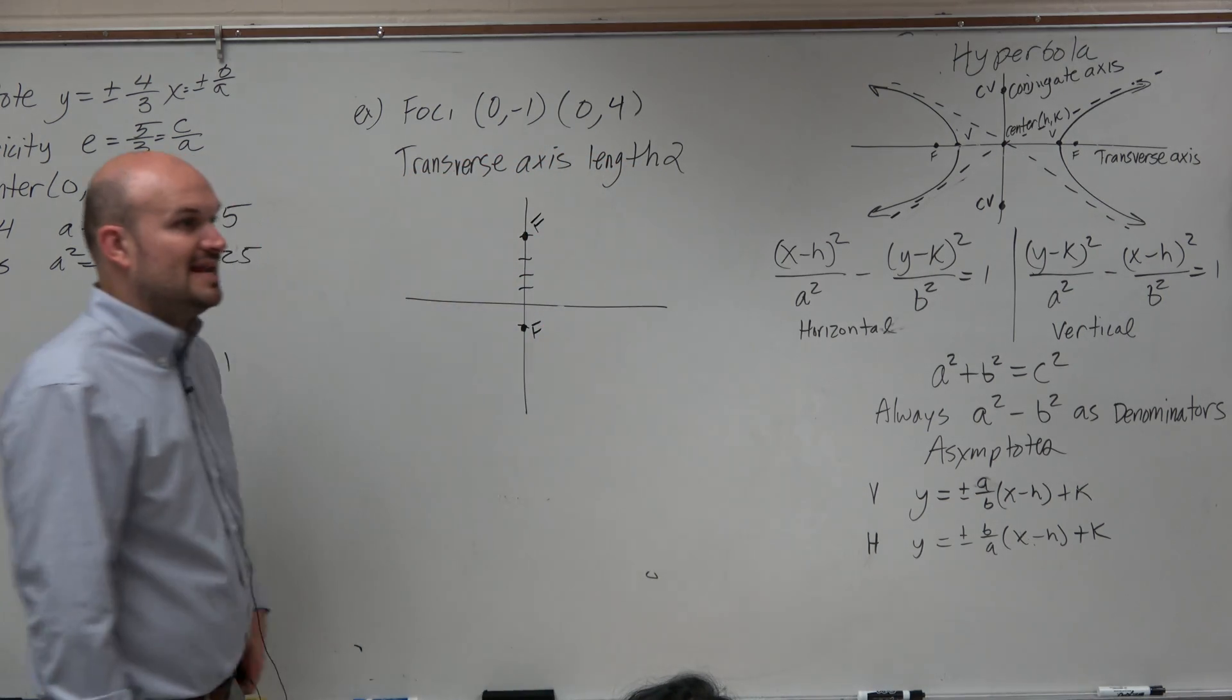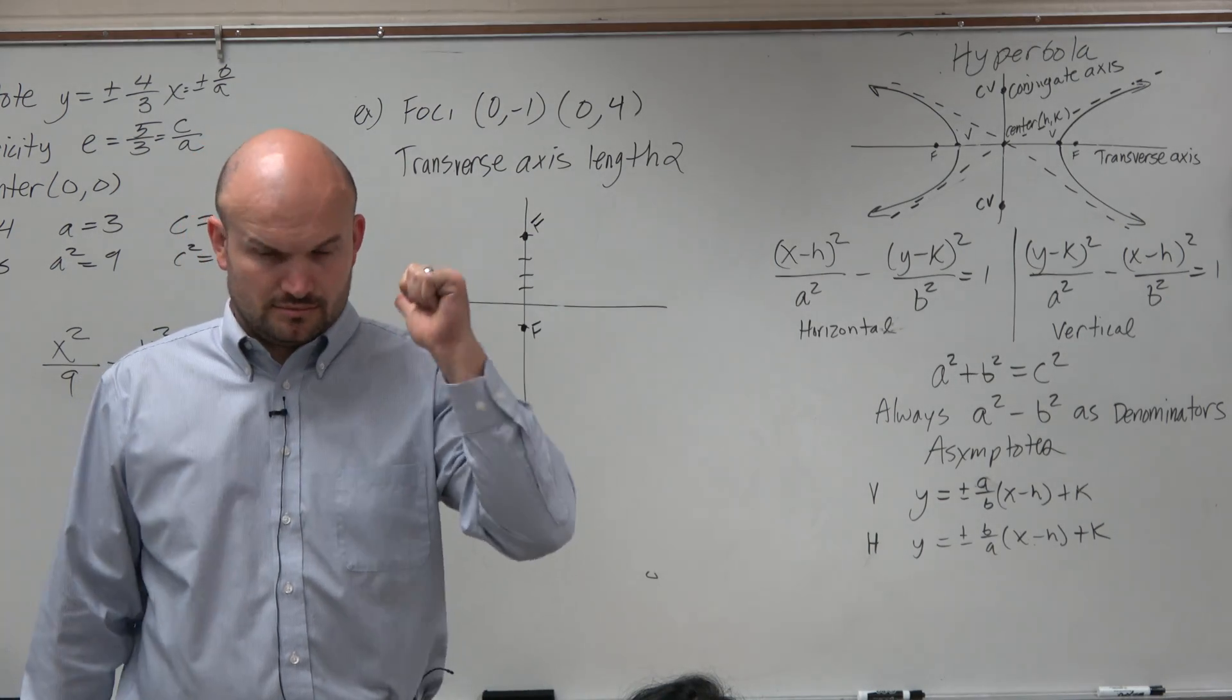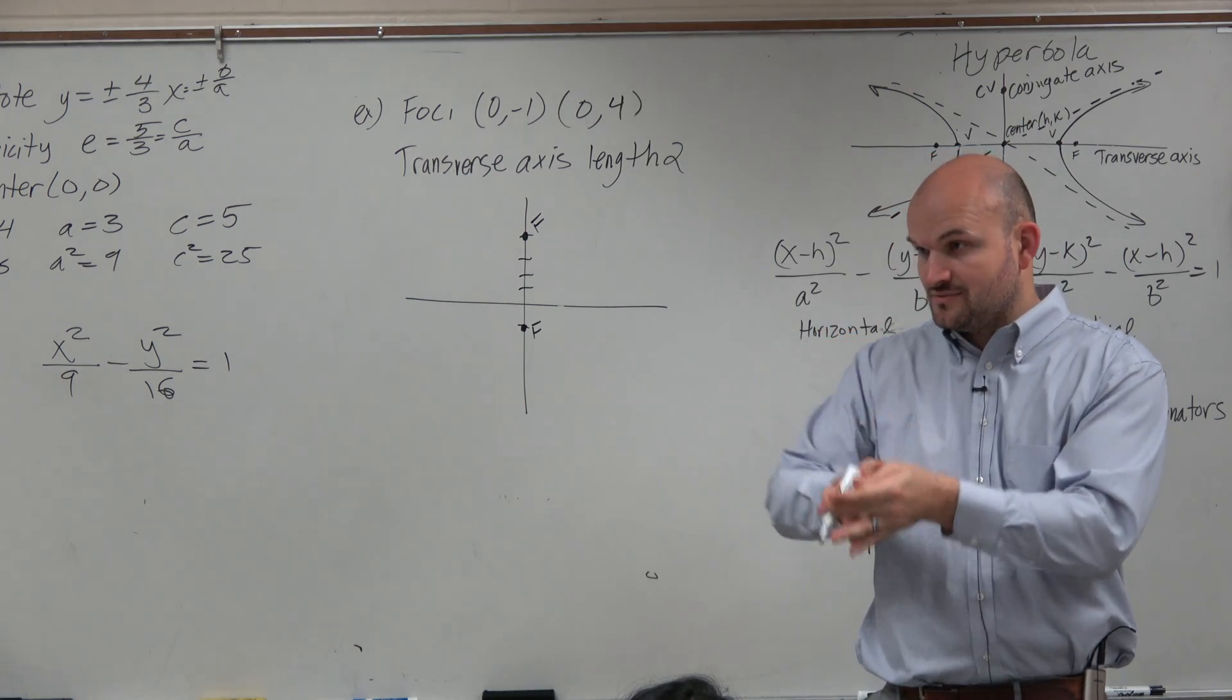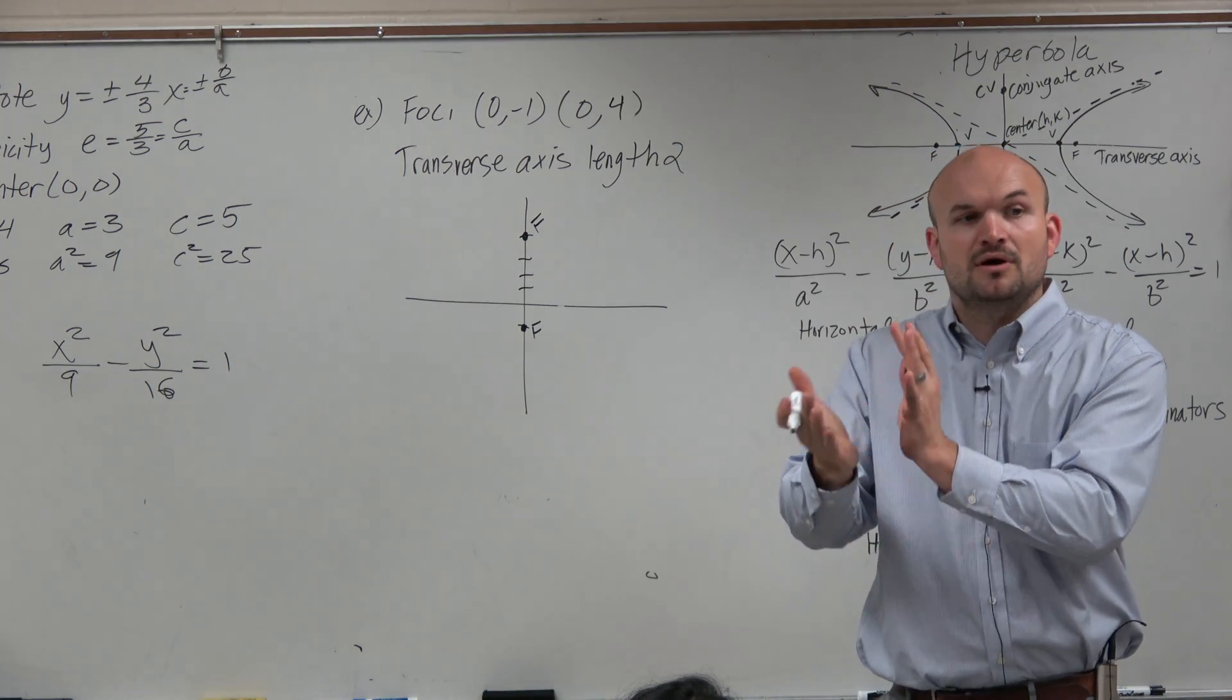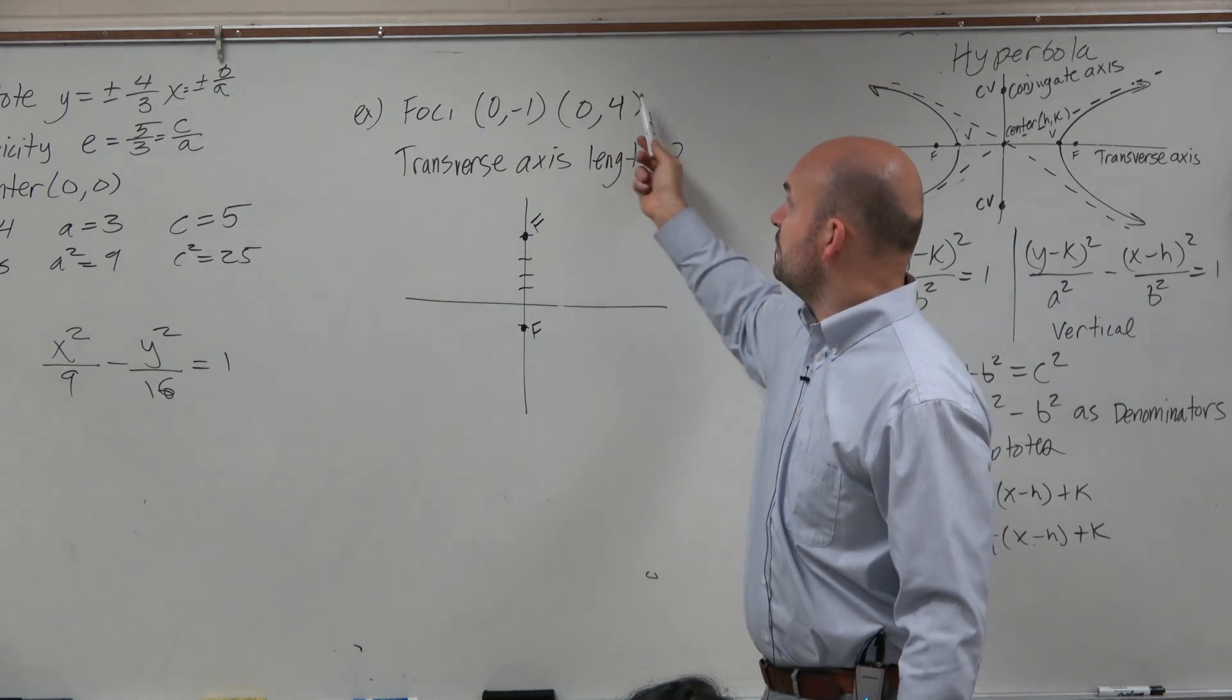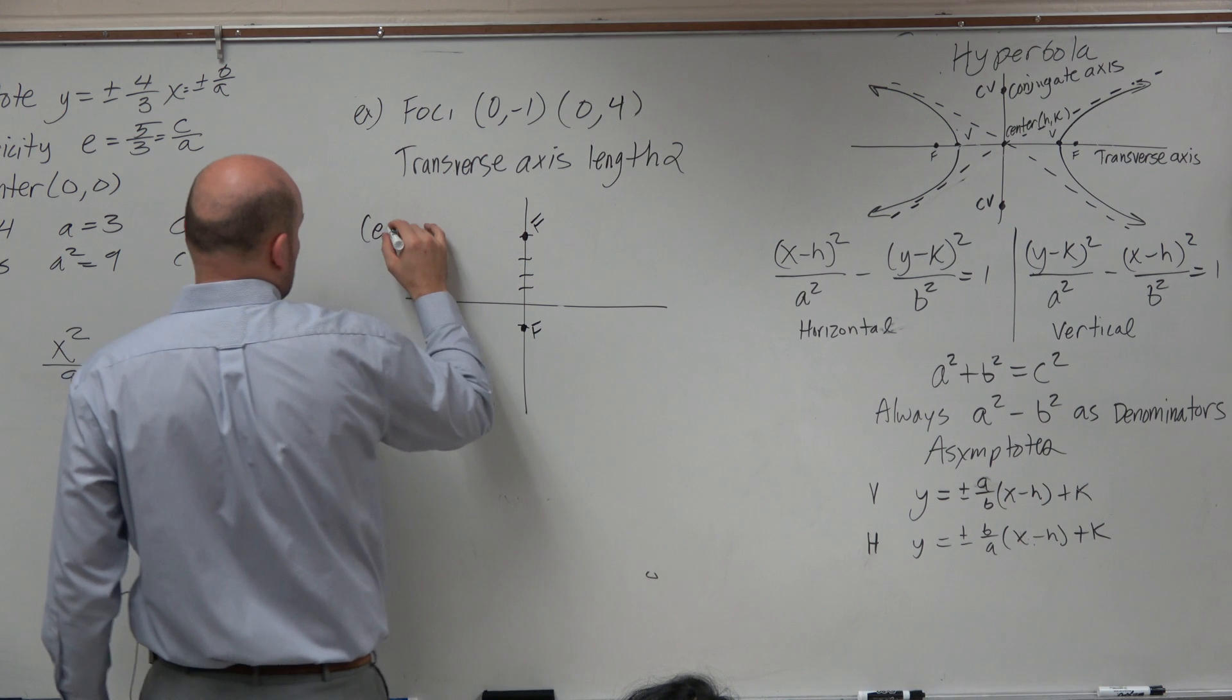Now I know that this is a vertical transverse axis, meaning my a squared's under my y squared. And also we can identify the center by finding the midpoint, which is x1 plus x2 divided by 2, y1 plus y2. So 0 plus 0 divided by 2 is 0. Negative 1 plus 4 divided by 2 is 3 halves, right? So my center is a fraction.